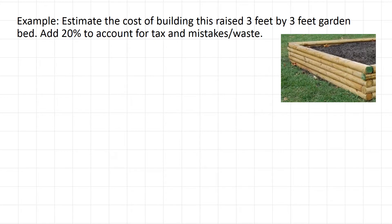Now the last thing we had to do was add that 20%. So we had our total cost of the timbers, $53.36.